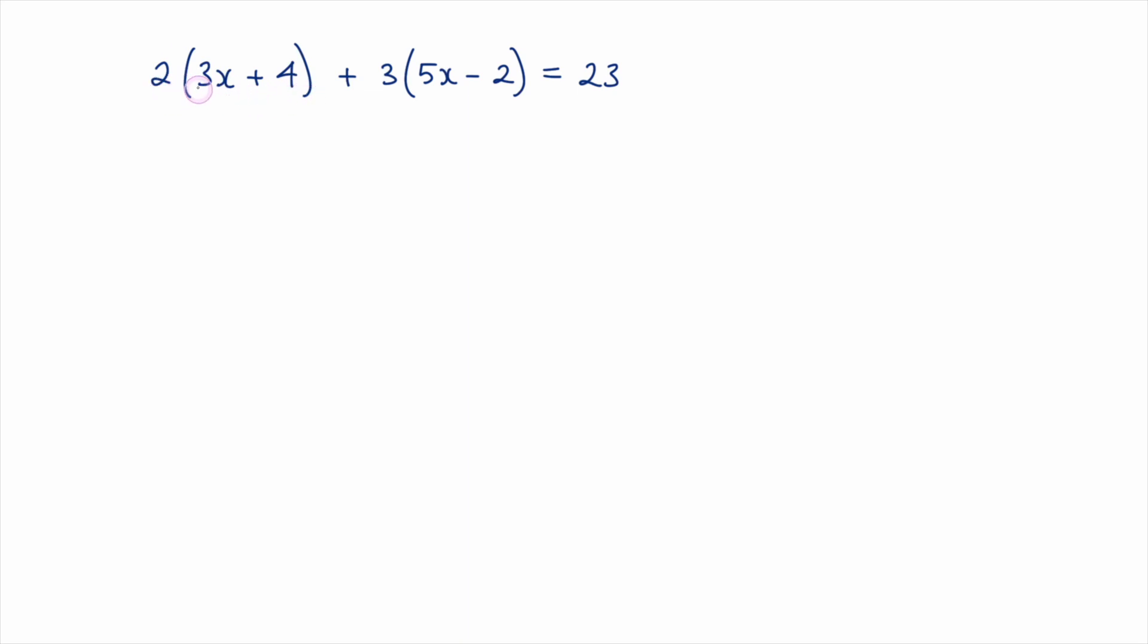Looking at this first bracket here we'll take the 2 and multiply by the 3x that will give 6x. We'll take the 2 and multiply by the 4 so that's plus 8. For the second bracket we've got the 3 multiplied by the 5x so plus 15x. We've got the 3 multiplied by the negative 2 so subtract 6 there and that is equal to 23.